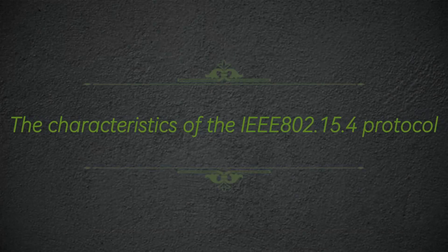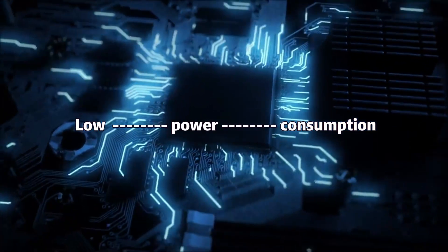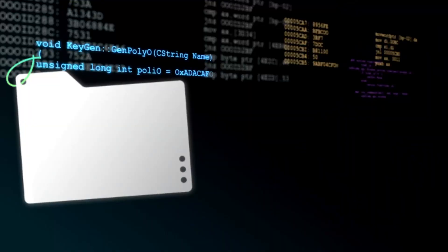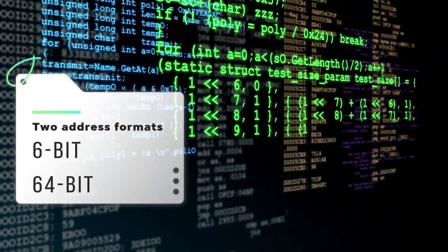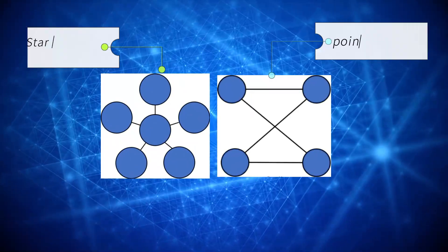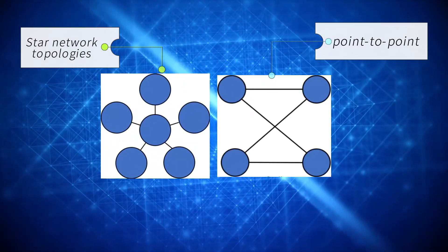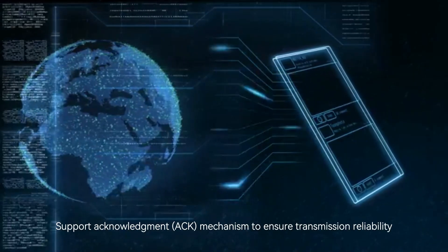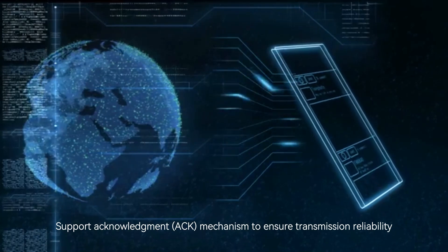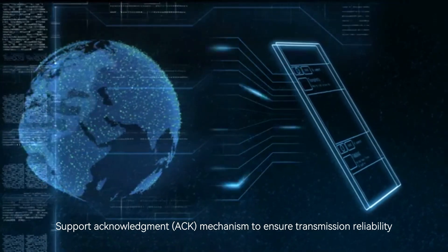The characteristics of the IEEE 802.15.4 protocol include: low power consumption; two address formats — 16-bit and 64-bit; star and point-to-point network topologies; carrier sense multiple access with collision avoidance (CSMA/CA); and support for an acknowledgement (ACK) mechanism to ensure transmission reliability.